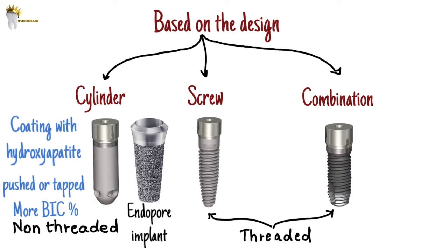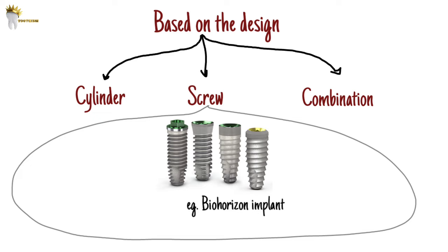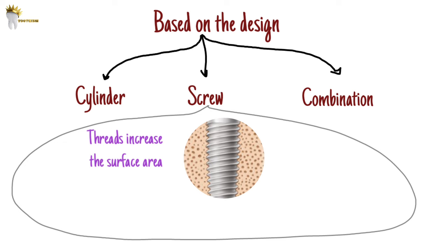The screw or threaded implant is the most commonly used design. The threads help in the retention of the implant in bone, and these are screwed into the prepared osteotomy site. Examples include BioHorizon implants and Nobel BioCare implants. This threaded design permits implant removal at the time of surgery if placement is not ideal, and also at stage 2 surgery if angulation or crestal bony contours are not correct. The threads are primarily designed to increase the bone-to-implant surface area and decrease stresses at the interface during occlusal loading compared with the cylinder implant body design, while also increasing mechanical retention in bone at initial implant insertion.